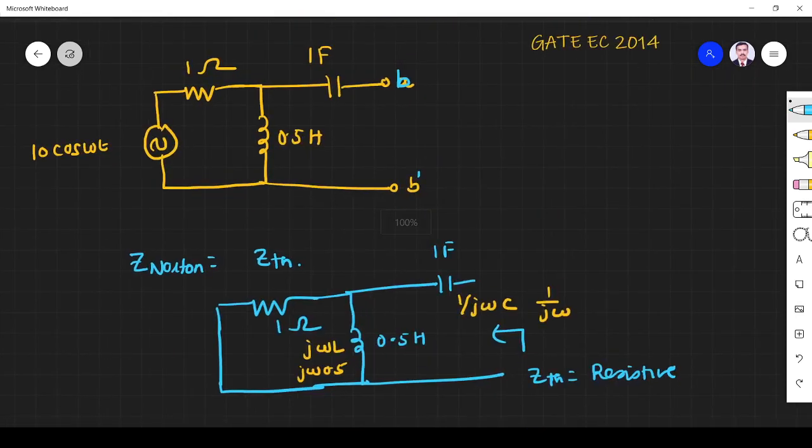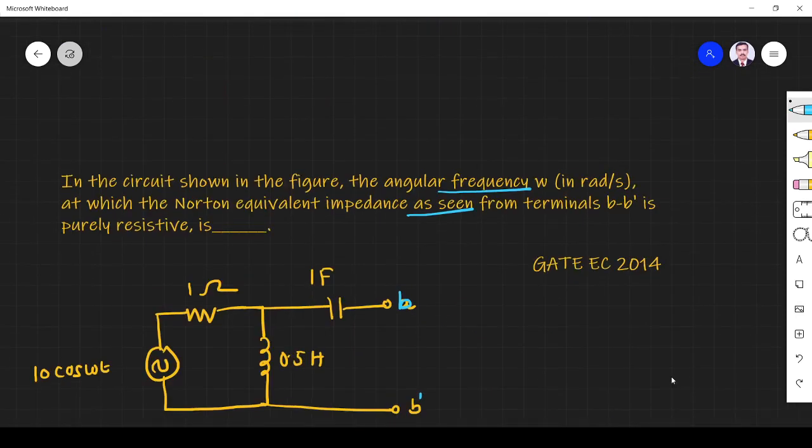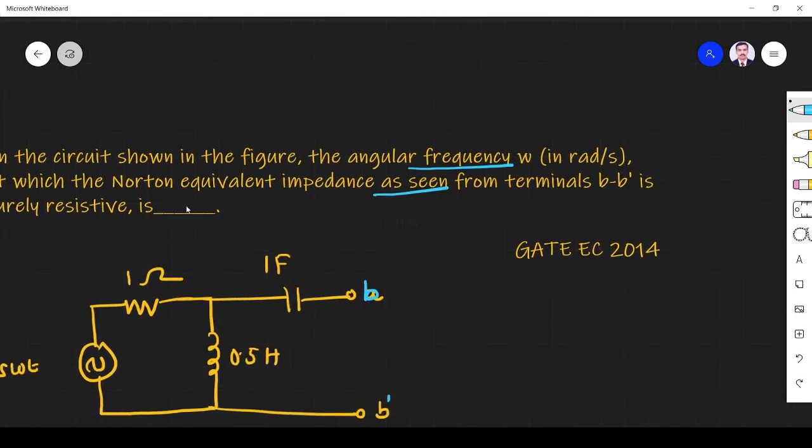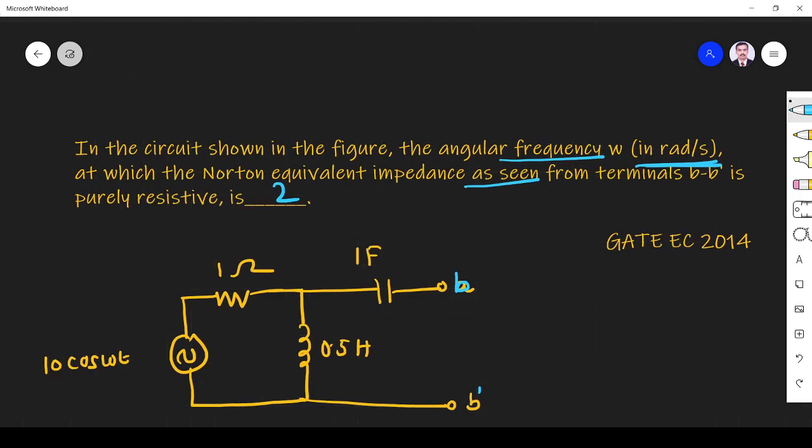The answer is 2 radians per second. Okay, the answer is ω = 2 radians per second. Thank you.